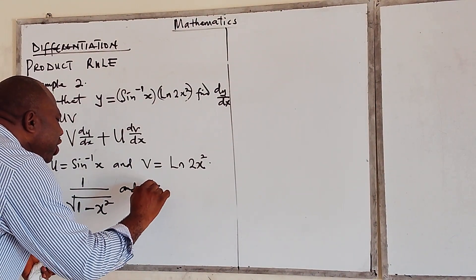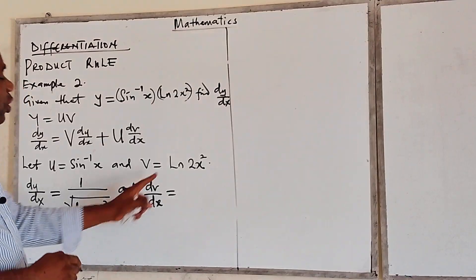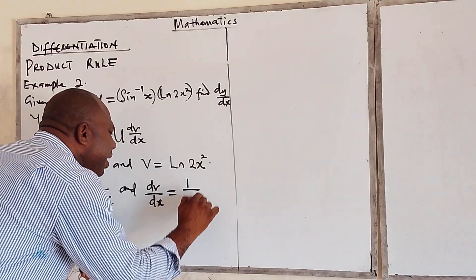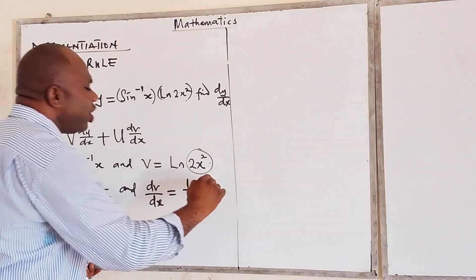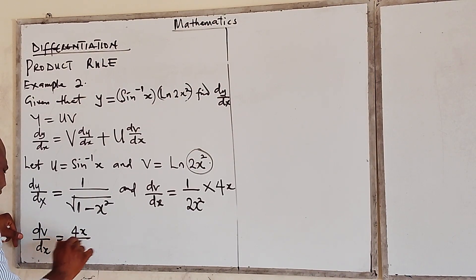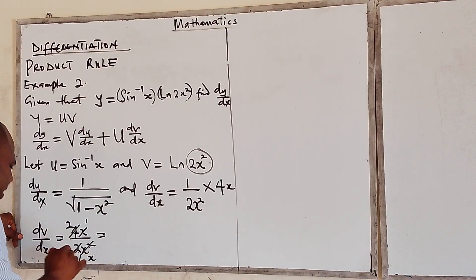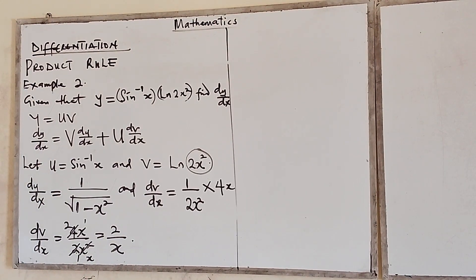Now for dv/dx. Because this is a function of a function, when you differentiate ln(2x²), you have 1 over 2x² then multiplied by the derivative of 2x². When you differentiate 2x², it gives 4x. So dv/dx equals 4x over 2x². Simplifying, 4 divided by 2 is 2, and x over x² is 1/x, giving us 2 over x.